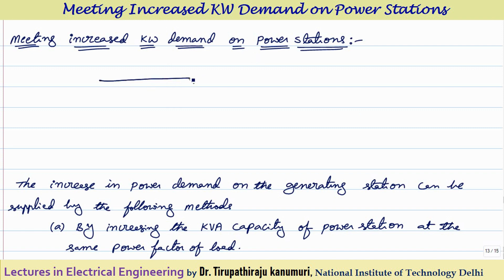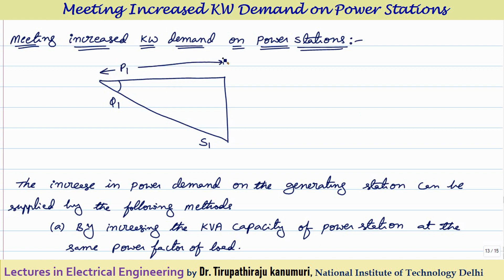Let us take an example. Initially, a power plant is having a capacity of S1 and it is operating at a power factor of phi 1. That means the active power supplied by this power station, represented by P1, is the active power taken by the supply to the load. Now, due to some reason, let us assume the load demand is increased from P1 to P2.